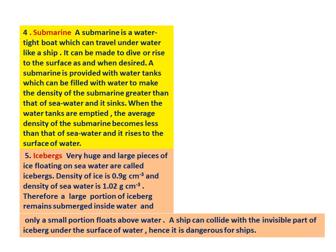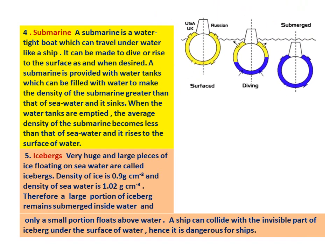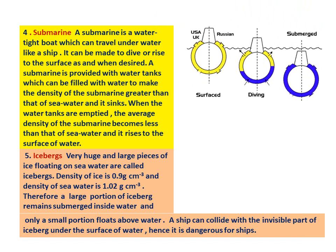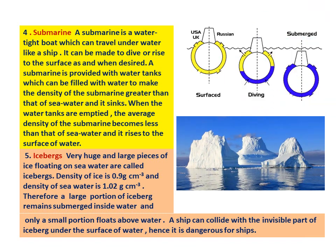Application four — submarine: a submarine is a watertight boat which can travel underwater. It is provided with water tanks which can be filled with water to make the density of the submarine greater than that of sea water, causing it to sink. When the water tanks are emptied, the average density of the submarine becomes less than that of sea water and it rises to the surface.